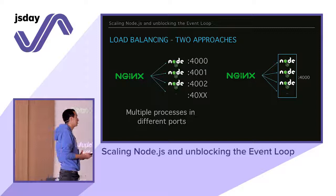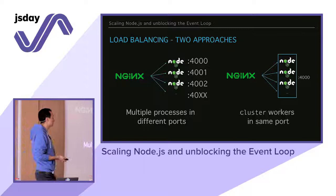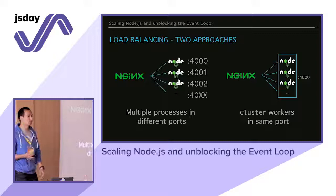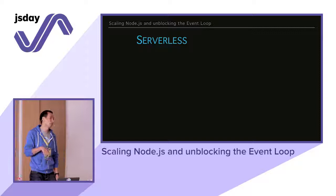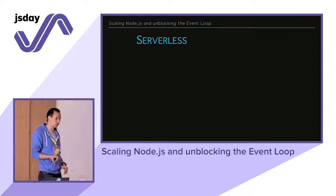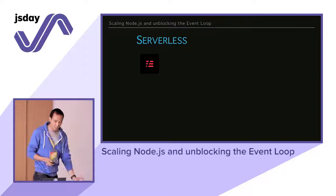The second approach is to run a cluster of Node.js processes on the same port. It can be done by the cluster module — you can launch cluster workers on the same port or use PM2. The next approach, the easy way, is serverless. Serverless allows you to launch Node.js processes and kill them when the request is done. That's infinitely scalable. It's great, and I believe it's the future.